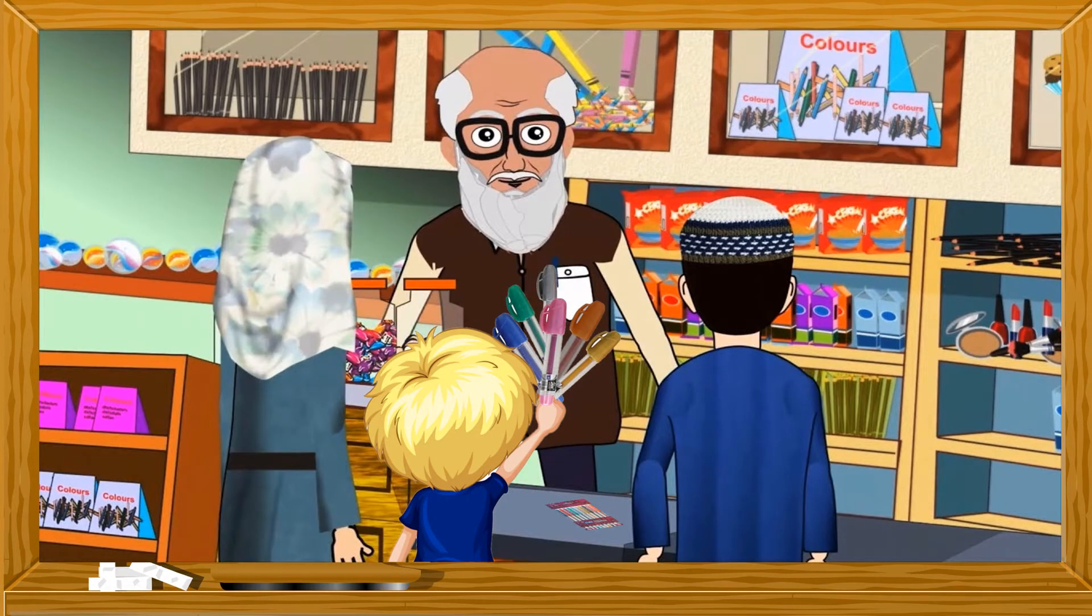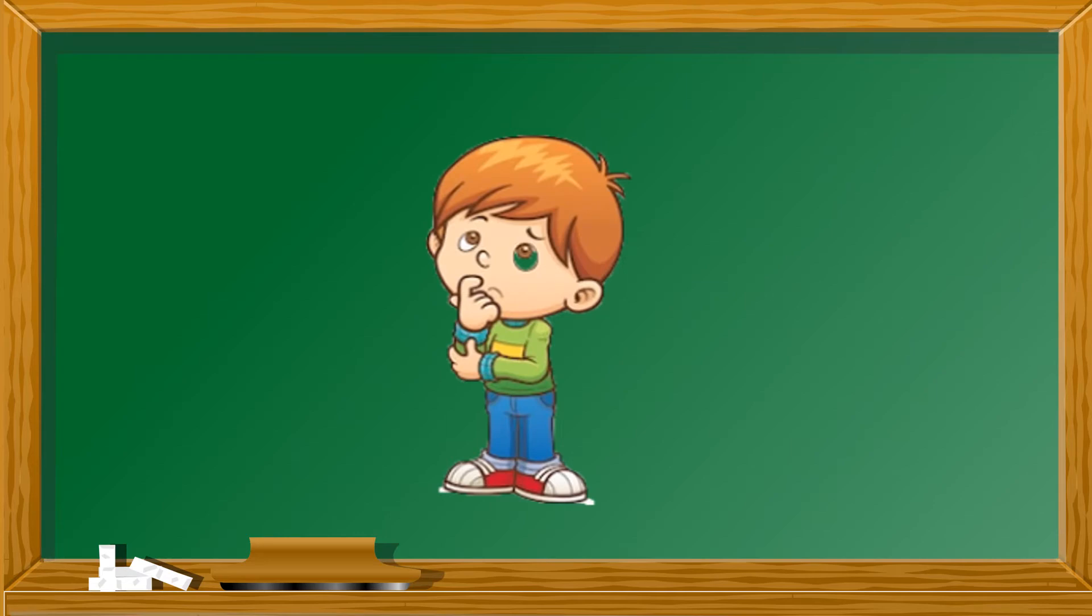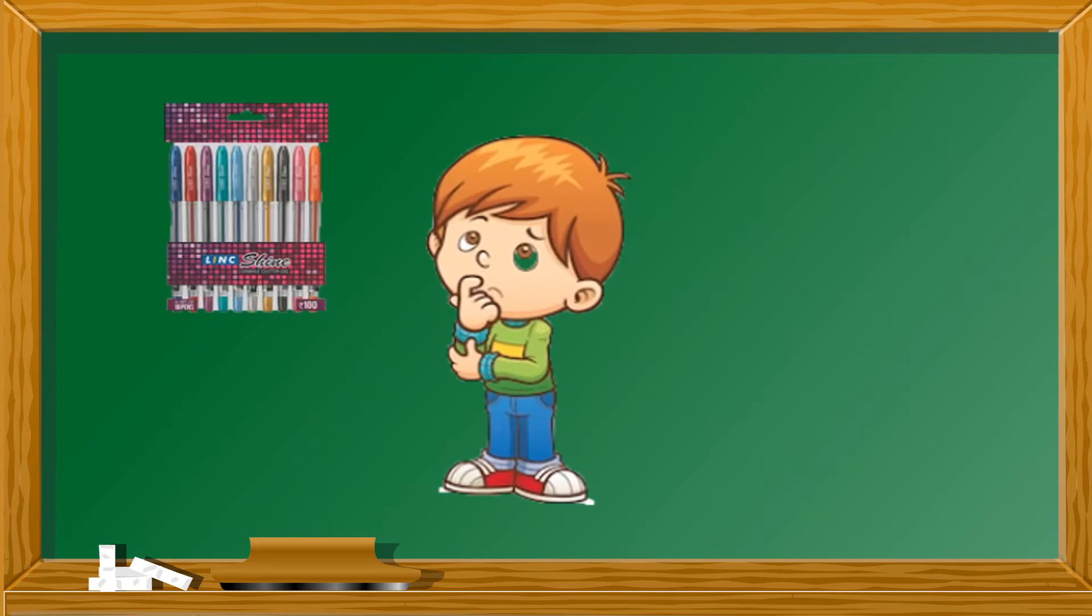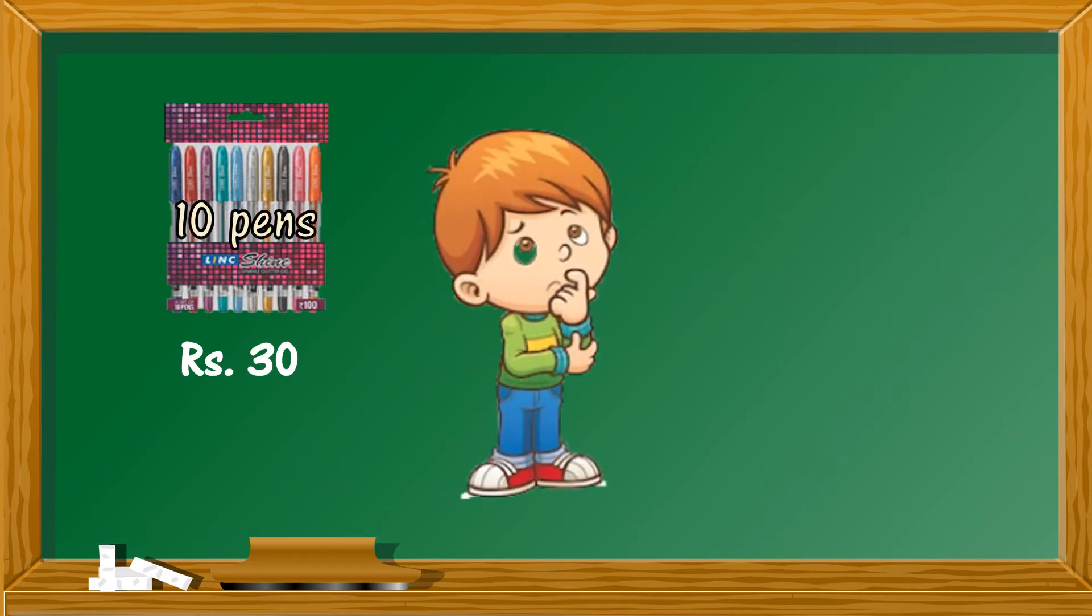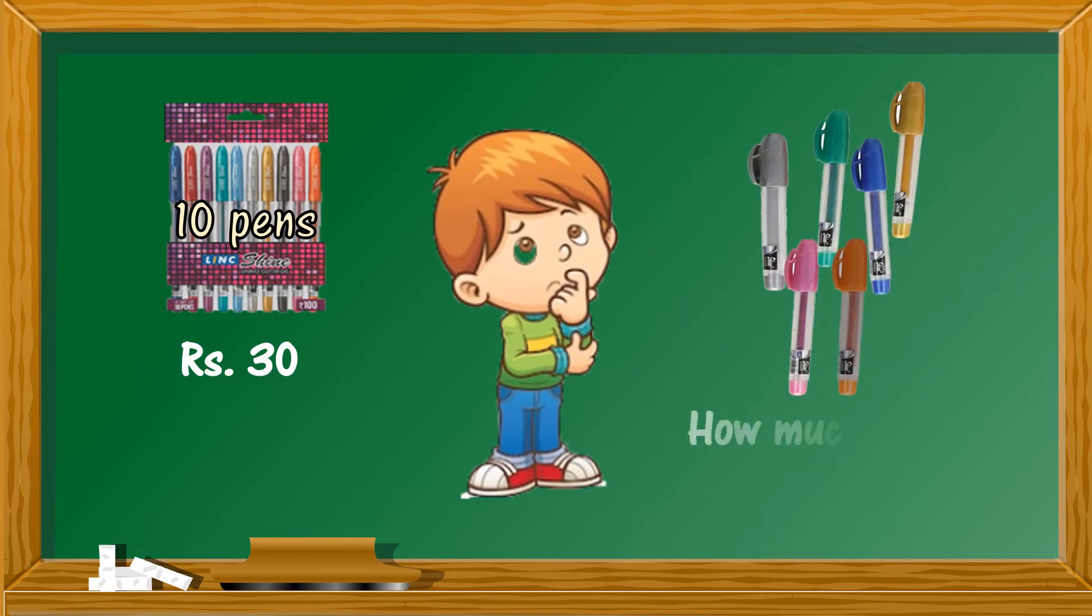Being busy, instead of telling him the cost of six pens, the shopkeeper told him that the cost of the packet is 30 rupees, and Ravi can calculate the cost of six pens himself and leave the change on the counter. Now Ravi didn't know what to do. He knew the cost of a packet of pens was rupees 30, but there were 10 pens in the packet and Ravi had bought only six. He didn't know how much to pay for those six pens.